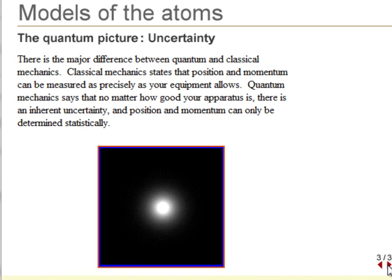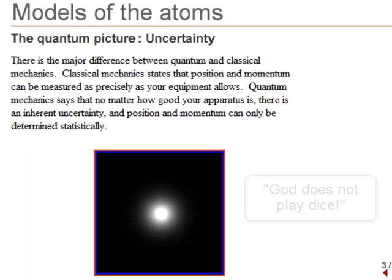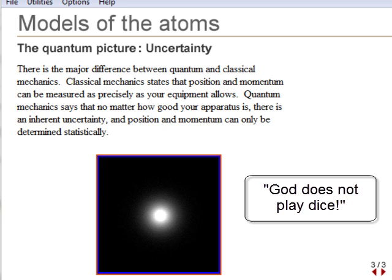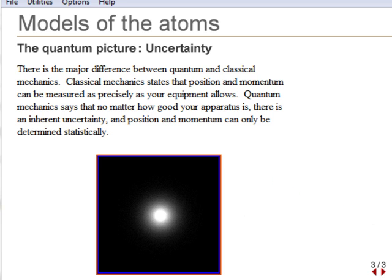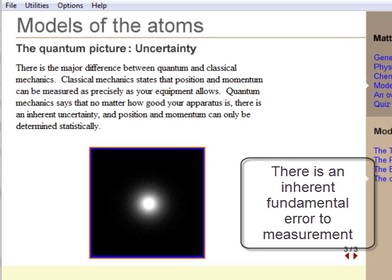The statistical interpretation of quantum mechanics is one of the most profound aspects of science. It was developed in Copenhagen between 1925 and 1930, and was not fully accepted by Einstein, who said, God does not roll dice. But today, most scientists agree Heisenberg was right. There is an inherent fundamental error to measurement.